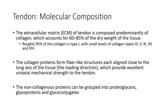Tendons, in terms of their molecular composition — this will be the general format going forward for the next several connective tissues — are comprised primarily, by dry weight, of collagen. The ECM of tendons is 60 to 80% collagen fibers. Most of that is type 1, with small levels of type 3, type 5, type 11, type 12, and type 14.